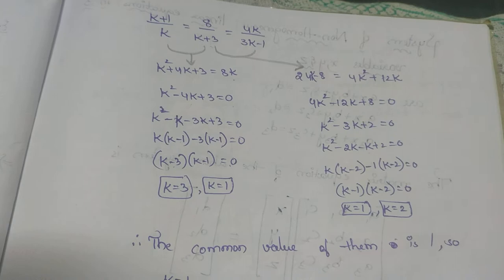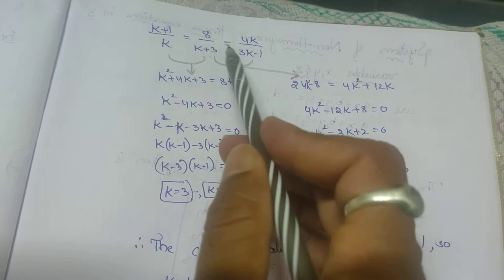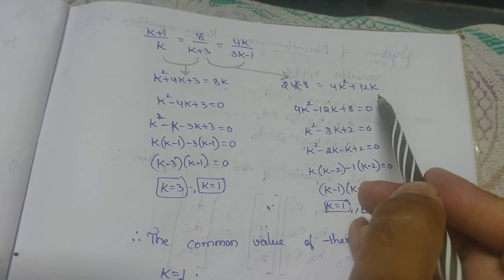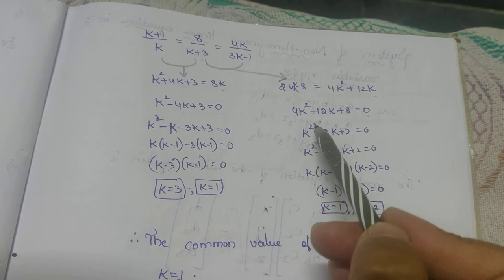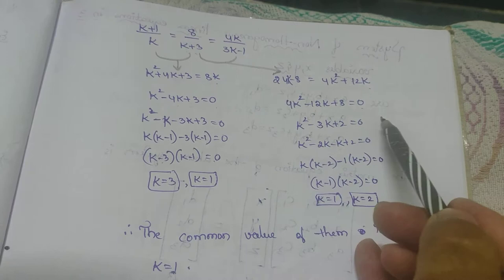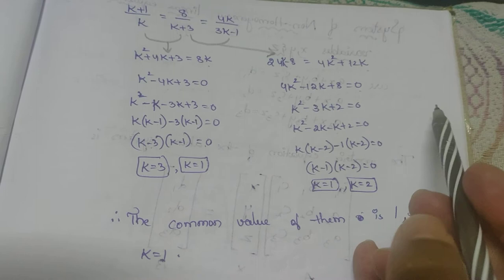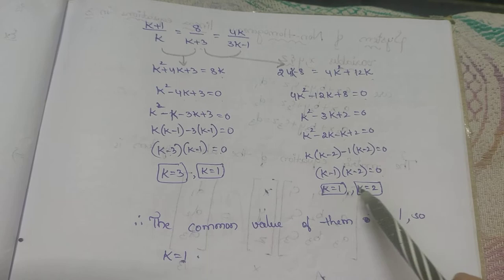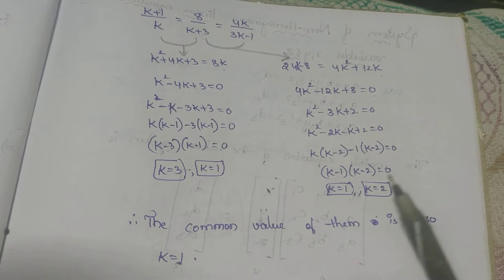Similarly, using the second and third ratios: 3×(8) = 24k − 8 = 4k² + 12k, giving 4k² − 12k + 8 = 0. Taking 4 common: k² − 3k + 2 = 0. Factorizing: (k−1)(k−2) = 0, so k = 1 or k = 2. The common value from both conditions must hold simultaneously. The common value is k = 1, so k = 1.